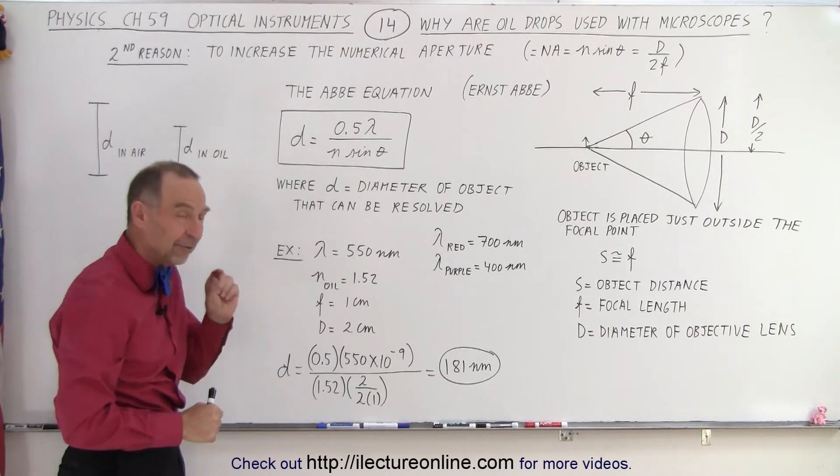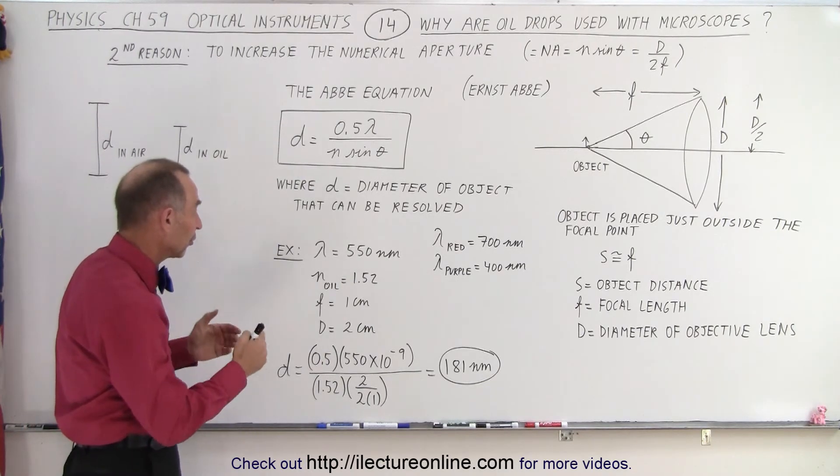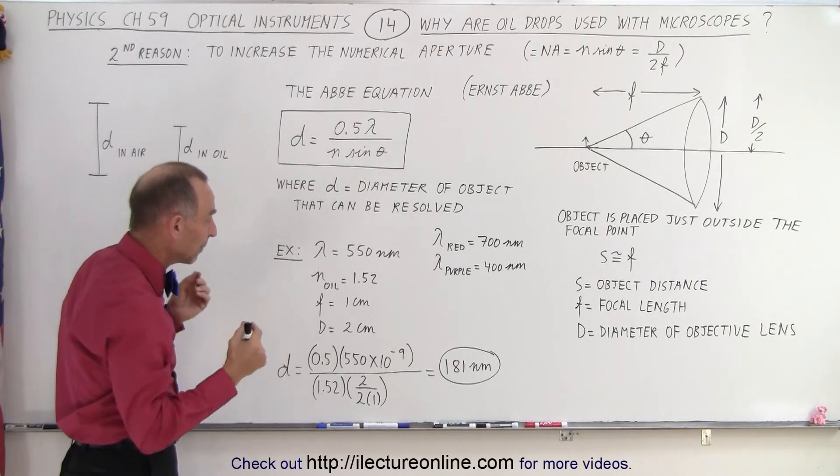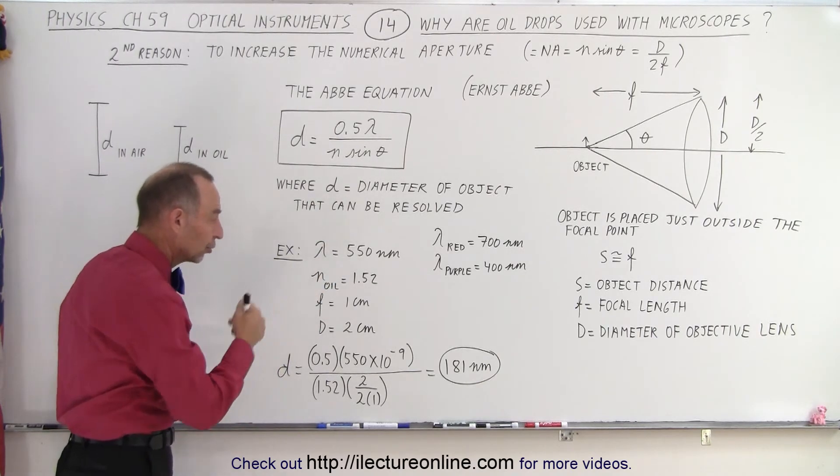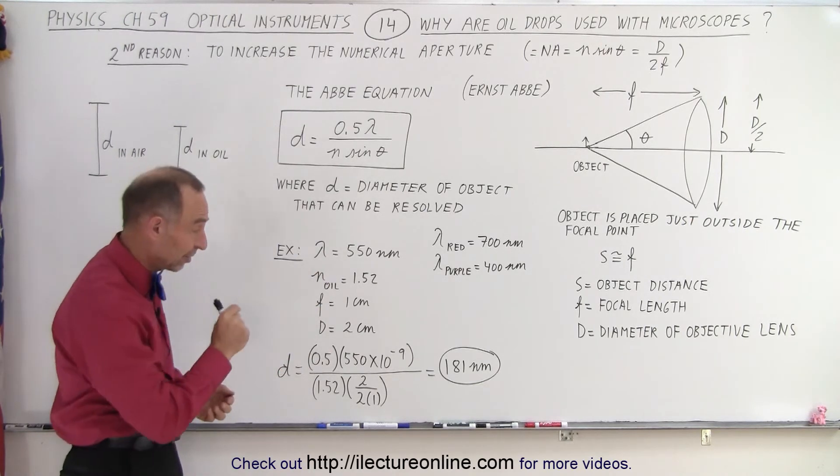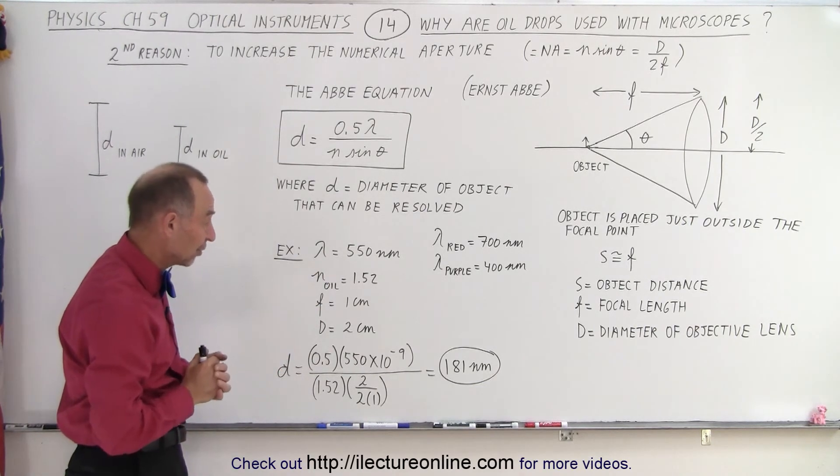With other words, the size of the object that can be discerned, that can be clearly seen using this concept, and because we use the immersion oil, it goes all the way down to half the wavelength of purple light, which is quite amazing. You see some very small objects using that principle.